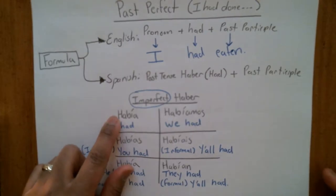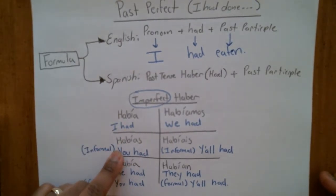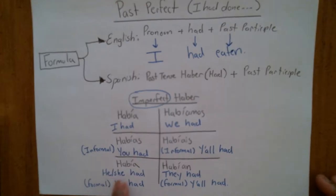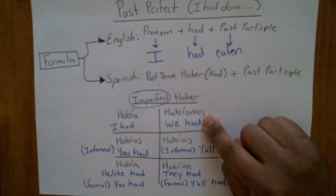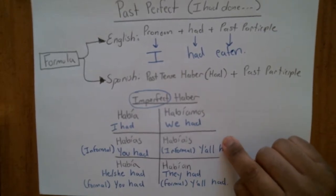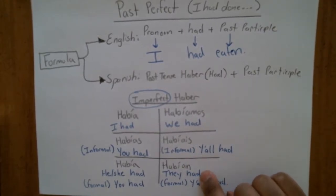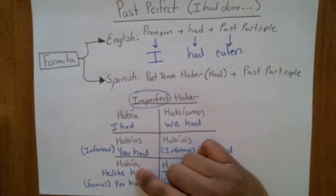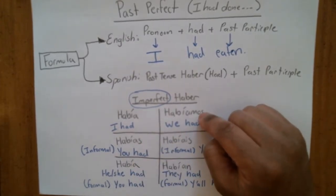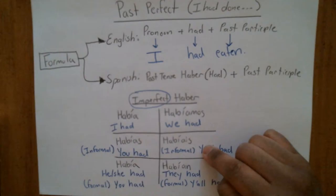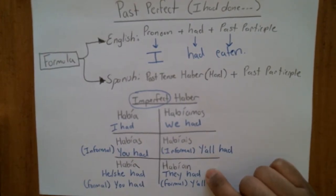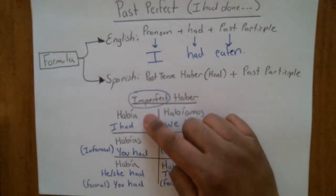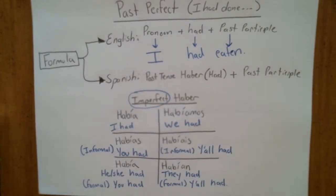Here is haber conjugated in the imperfect to form the past perfect. Yo: había — I had. Tú: habías — you had. Él/ella/usted: había — he or she had, or you had formal. Nosotros: habíamos — we had. Vosotros: habíais — y'all had informal. Ellos/ellas/ustedes: habían — they had, or y'all had formal. These same pronouns stay in their same positions in the six-box throughout.